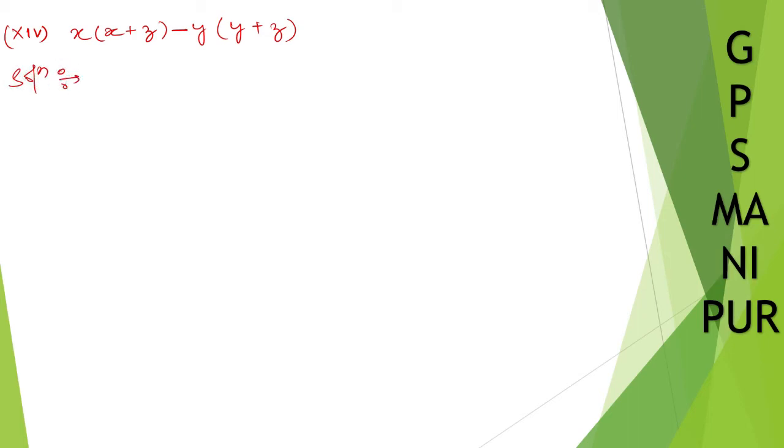What can we do here? Let us multiply and check. x into x will be x square, x into z will be plus xz, minus y into y will be minus y square, minus y into z will be minus yz.